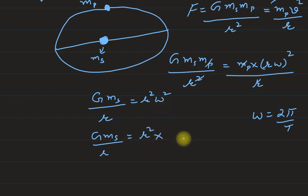For the time period expression, I will write in place of omega, 2π by capital T. That will become 4π² because of the square, 4π² upon T². From here, doing cross multiplication, T² is equal to r³ times 4π² upon r, which becomes r³.